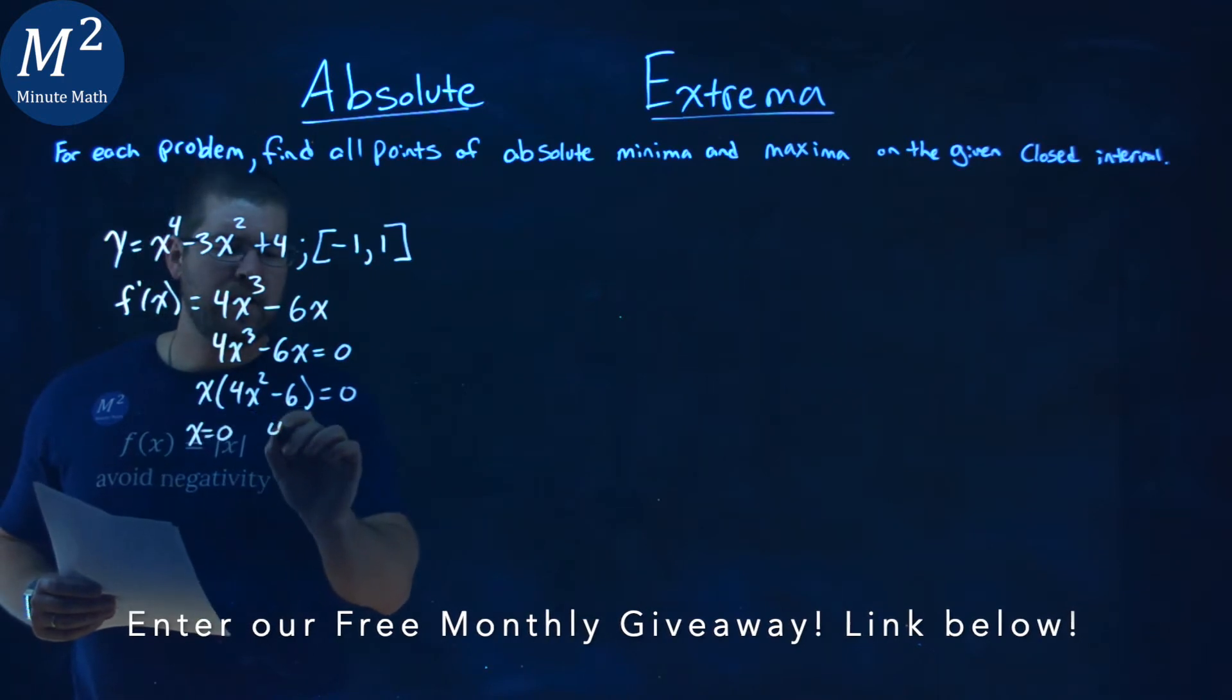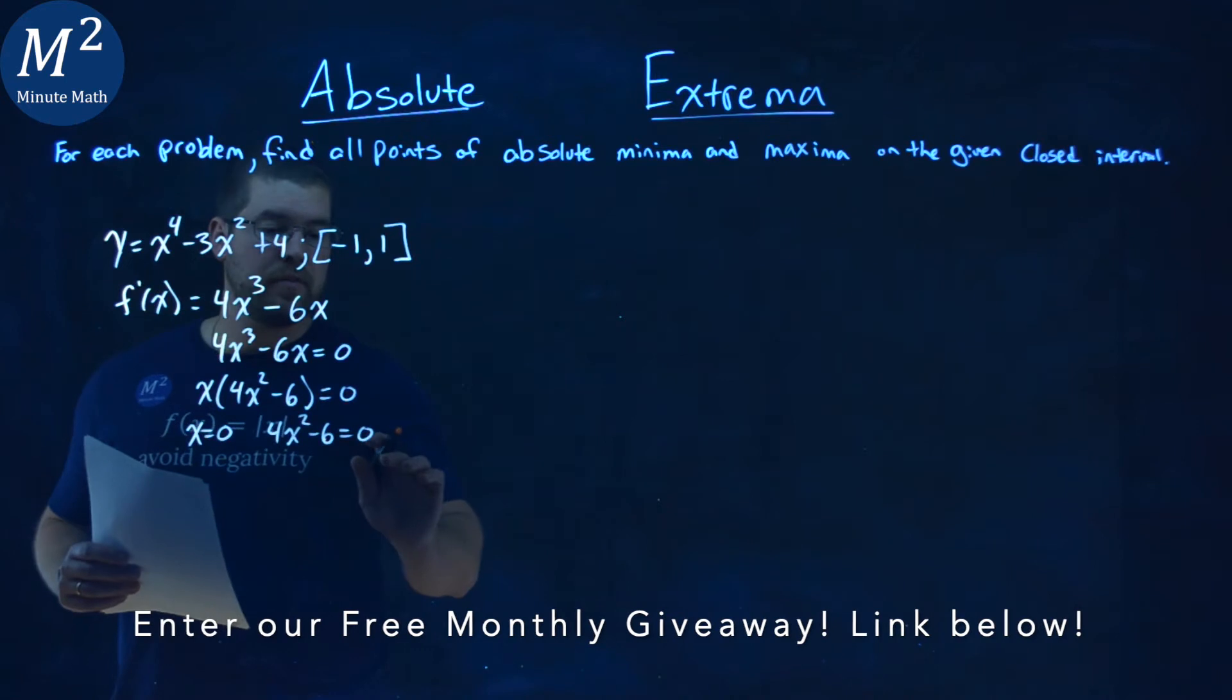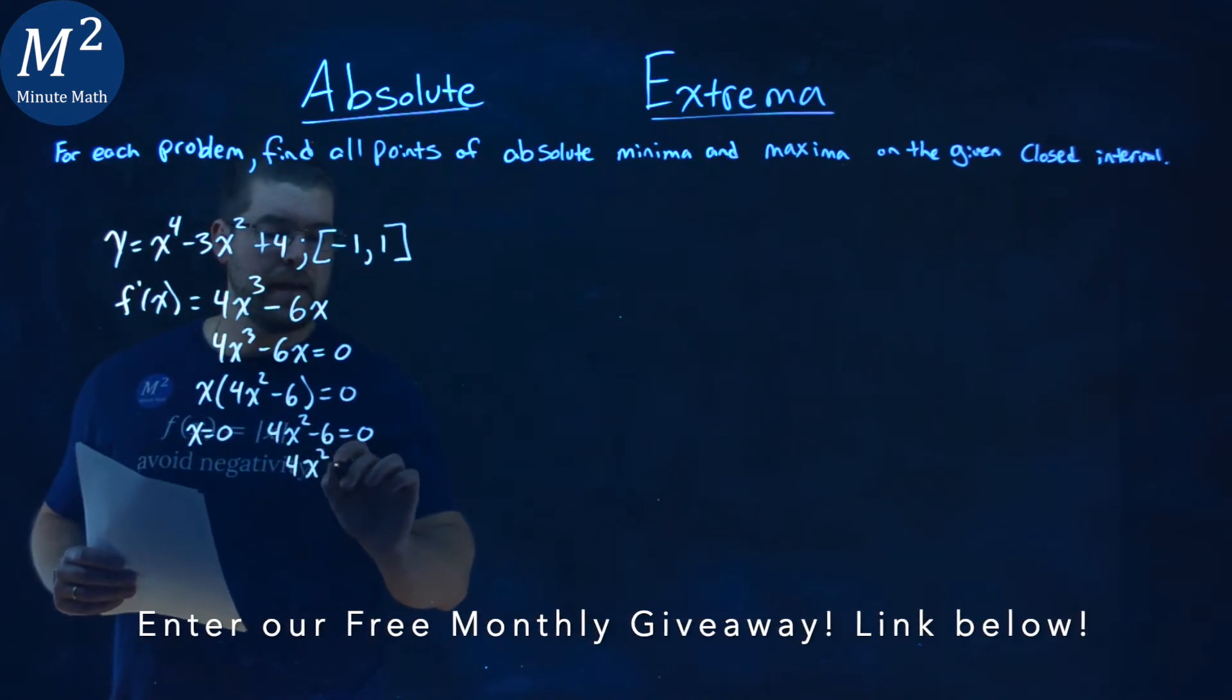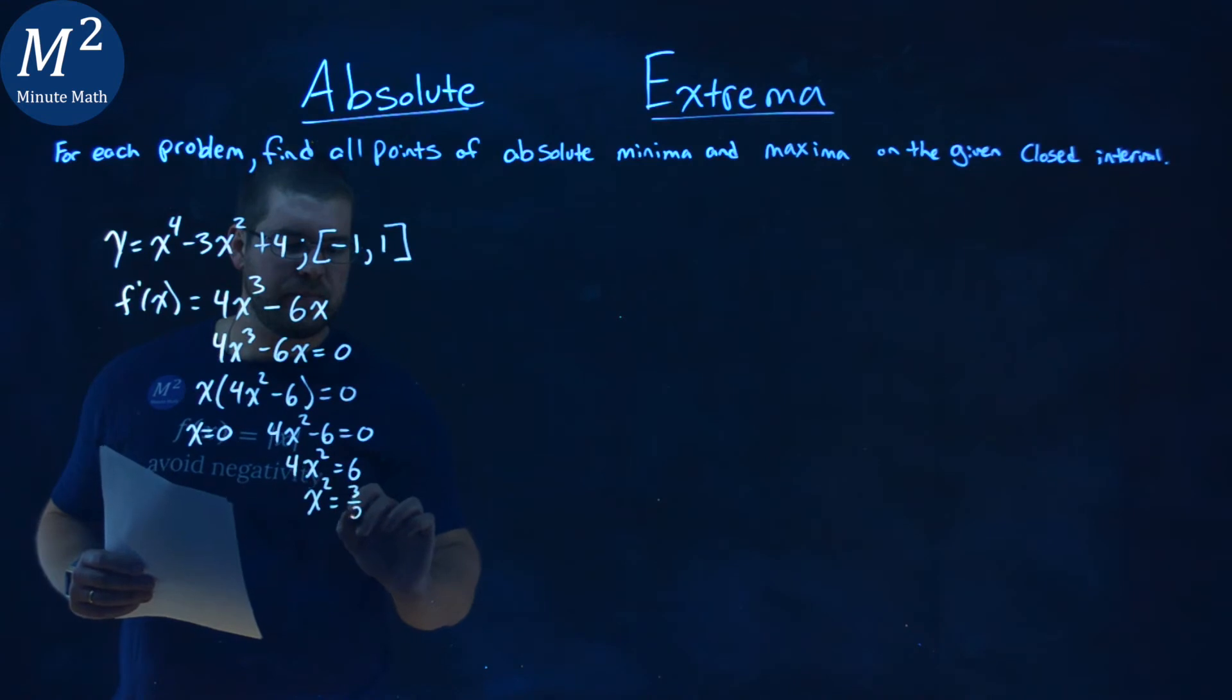x equals 0, and 4x squared minus 6 equals 0. Add 6 to both sides, and we have 4x squared equals positive 6. Divide both sides by 4, and x squared equals 6 divided by 4, or 3 halves. Square root both sides, and x equals plus or minus the square root of 3 halves.